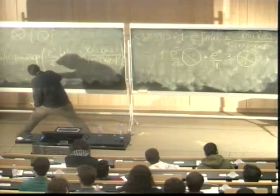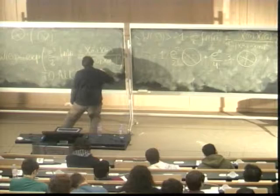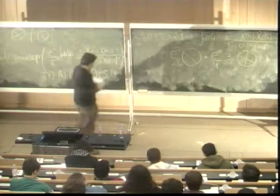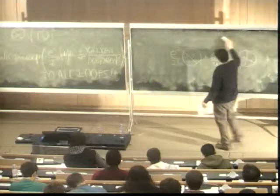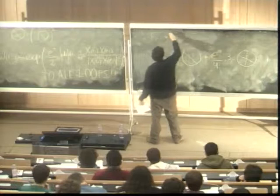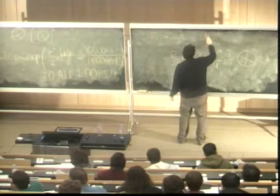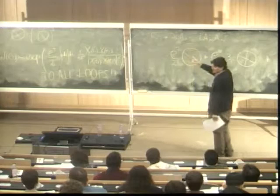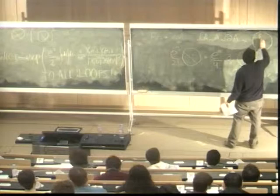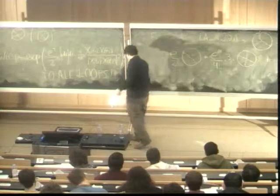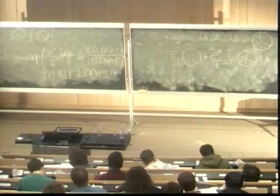Of course, for non-Abelian theories, F_{mu nu} contains a commutator term [A_mu, A_nu], so F_{mu nu}^2 has additional cubic and quartic vertices. This means non-Abelian theories also have extra diagram types and the result doesn't exponentiate so simply. This is true only for the Abelian theory. I think it's a good time to break here — thank you.